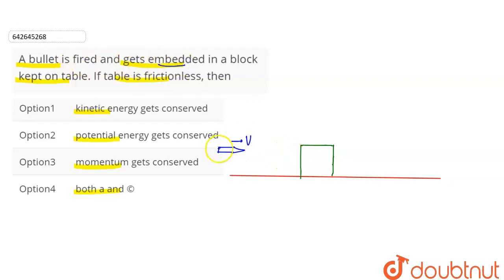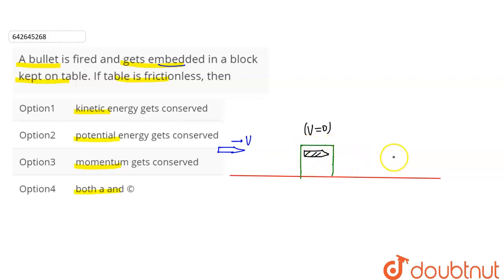The bullet goes inside the block and gets embedded — meaning the bullet fits completely inside the block. During the collision, the bullet comes and collides with the block. The block was initially at rest, so the block's velocity was 0. The bullet collides and gets embedded inside the block, meaning the bullet will remain inside the block.